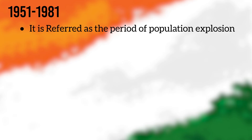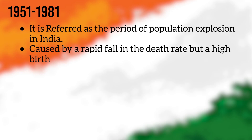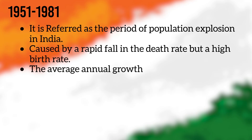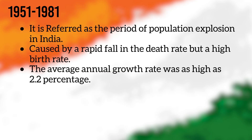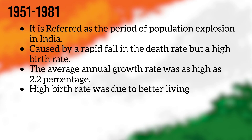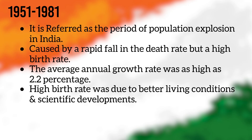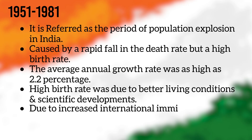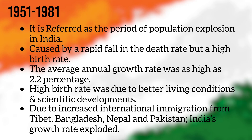From 1951 to 1981, this is referred to as the period of population explosion in India, caused by a rapid fall in the death rate but a high birth rate. The average annual growth rate of population was as high as 2.2%. High birth rate was due to better living conditions and scientific developments. Due to increased international immigration from Tibet, Bangladesh, Nepal, and Pakistan, India's growth rate exploded.